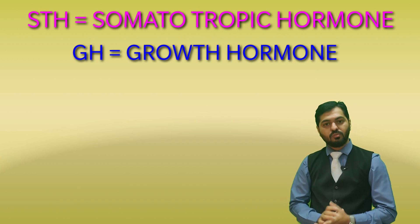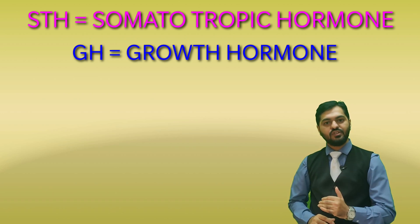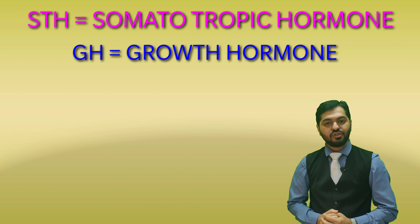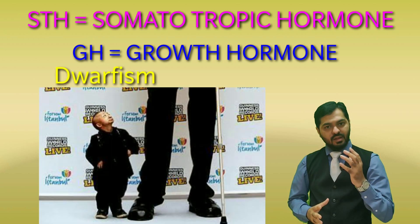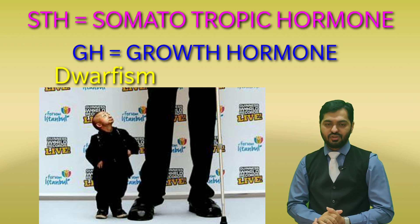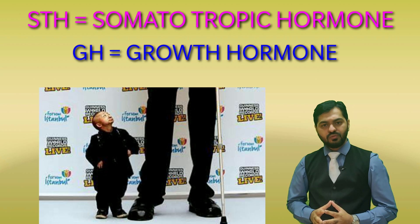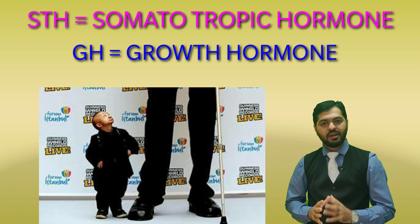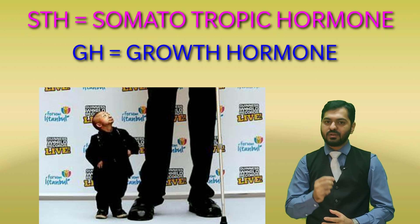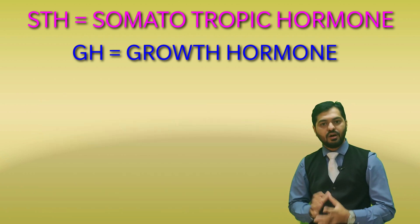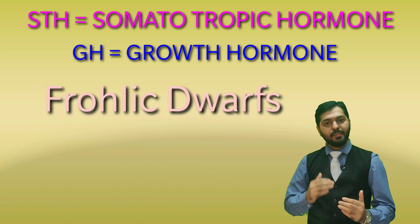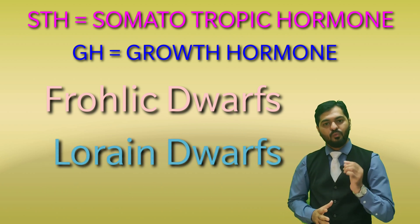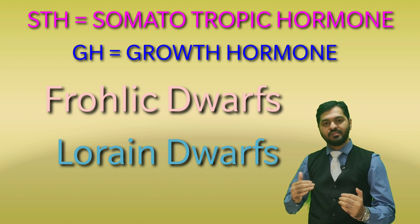Coming to the disorders of Growth Hormone: hyposecretion of Growth Hormone in children results in a condition known as Dwarfism, where there is mainly physical retardation and height does not increase. These dwarfs are also known as Midgets. Dwarfism can be of two types: Frolic Dwarfs, who are mentally abnormal with mental retardation as well, and Lorraine Dwarfs, who are mentally normal but have only physical retardation.